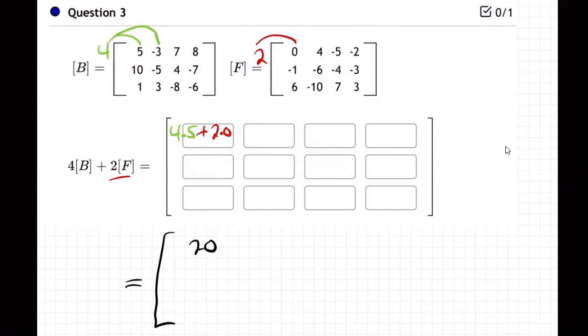And then we do the next one. It's four times minus three plus two times four. I have to make my pen a little smaller. It's hard to squeeze all that in. So that's going to be minus 12 plus eight, minus four.